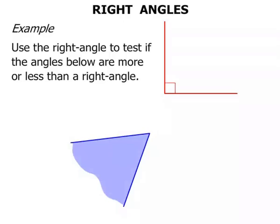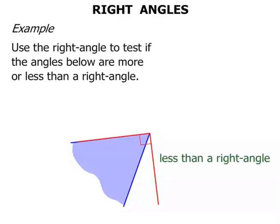And here's an angle we're going to try. Now what do you think? Do you think that's more or less than a right angle? Let's move our right angle tester around. And we can see now that our original angle is less than the right angle.